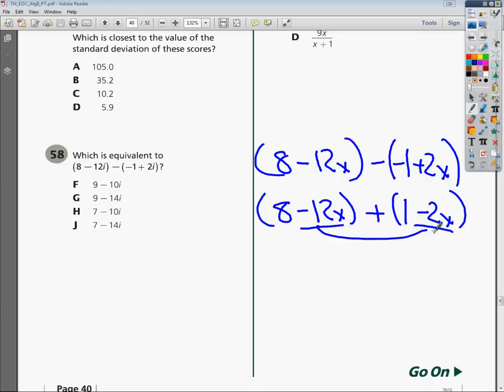Here's a set. So negative 12 minus 2 is negative 14x, or i in this case. And then my other numbers would be 8 plus 1, which last time I checked would be 9. So my answer is 9 minus 14i.